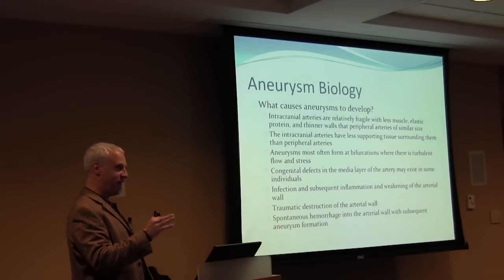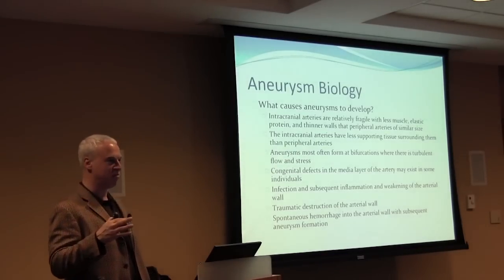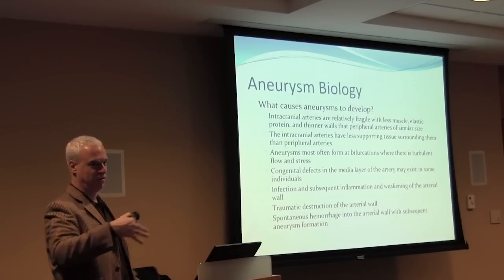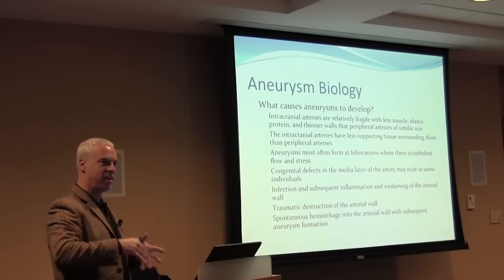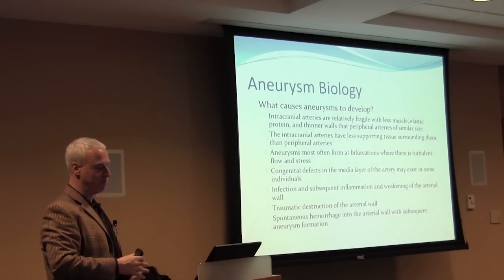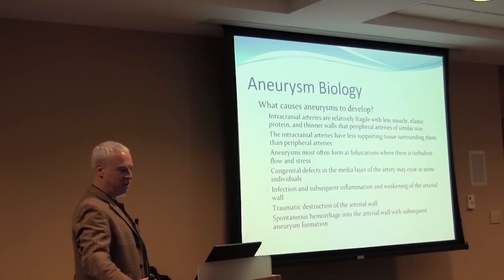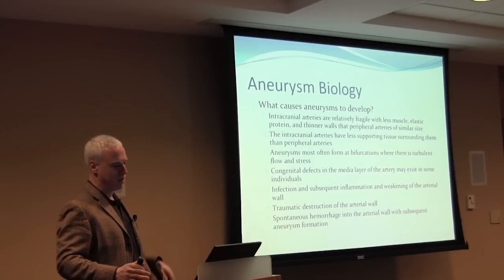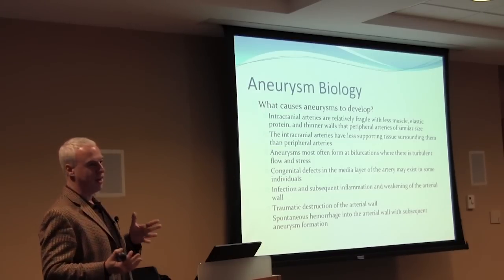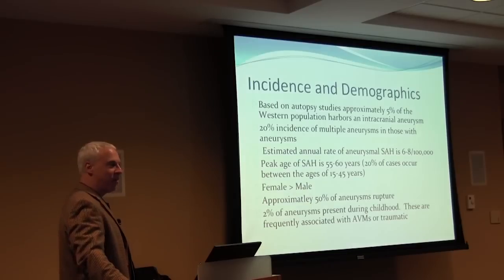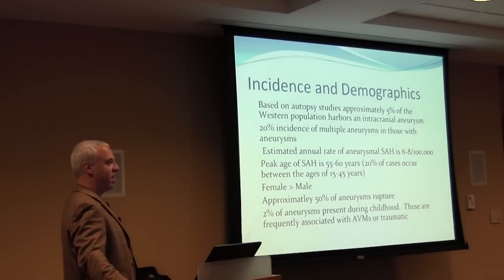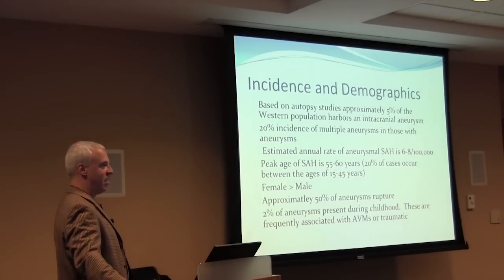Aneurysms most often occur at bifurcations — where arteries branch — because that's where flow is most turbulent. Think of water going down a river where it branches: at the crotch, water rushes around in eddies, with a lot of stress right at that point. How common are aneurysms? Five percent of people — if you look at autopsy studies — will have an aneurysm. The chances are somebody in this room has one.